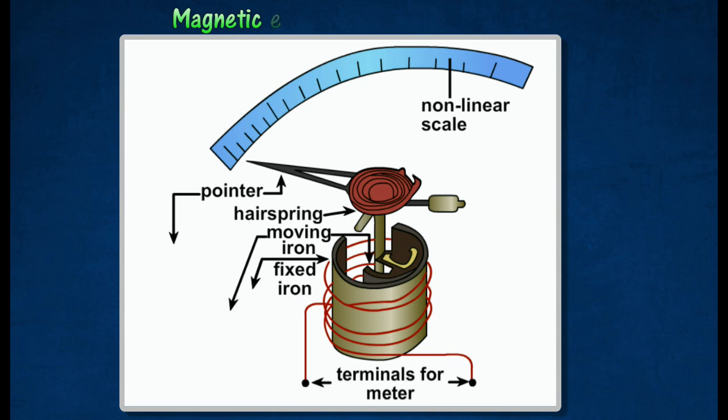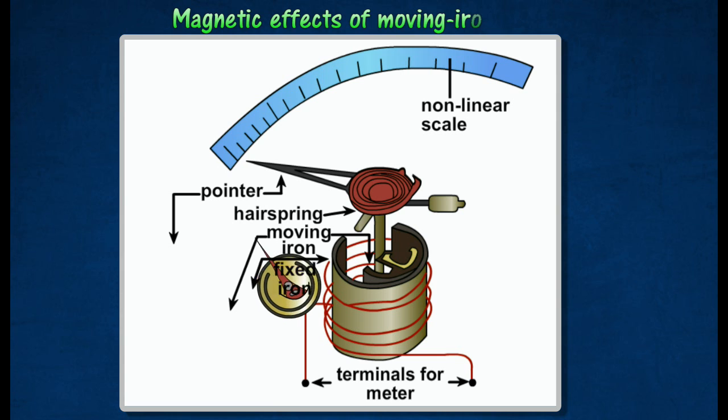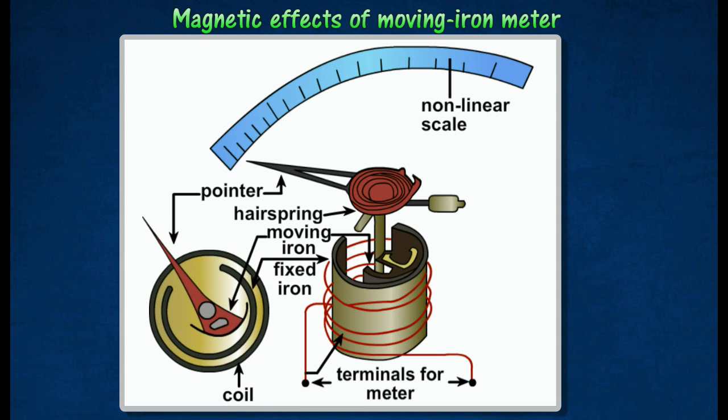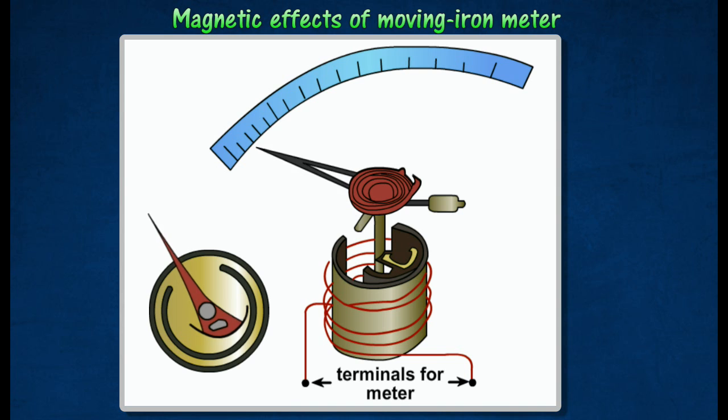When a current is flown through the coil, both the bars are magnetized with like poles adjacent to each other. Repulsion takes place, causing the smaller bar to rotate until it is stopped by the control couple provided by the hairsprings.